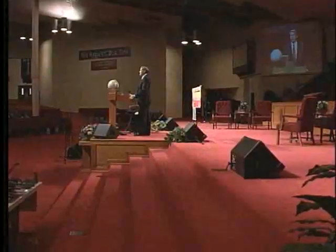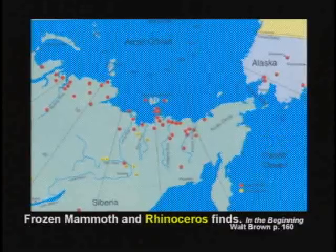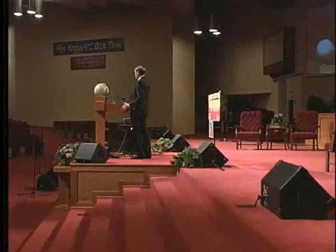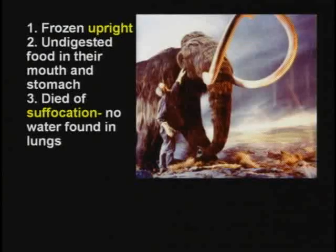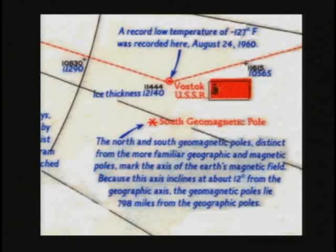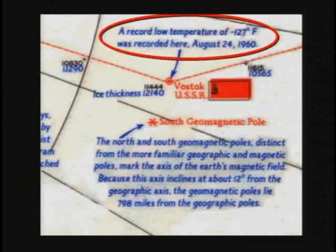Red dots indicate where frozen mammoths have been found; yellow dots indicate frozen rhinoceroses. Some mammoths are frozen in the upright position with undigested food in their stomachs and mouths. They died of suffocation — there is no water found in the lungs. Small ice crystals in the blood indicate they probably froze in less than five hours, which requires temperatures less than 300 below zero. But it never gets 300 below zero on Earth — the coldest temperature ever recorded is minus 127 degrees, which is not cold enough to freeze the mammoths.